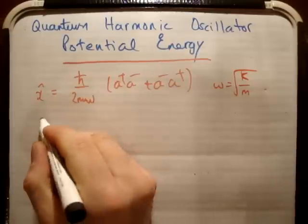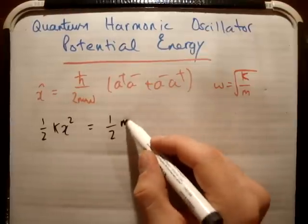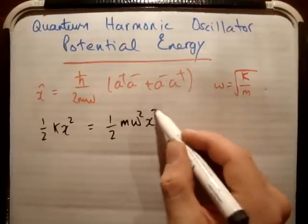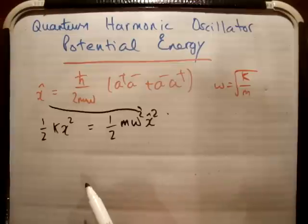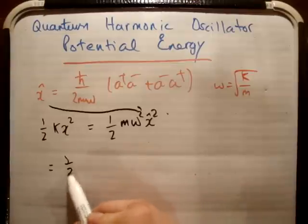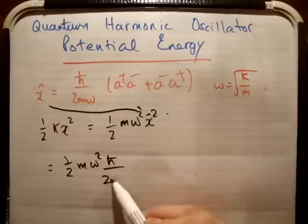Well the potential energy is 1 half kx squared. That's 1 half m omega squared x squared. And look there's our x squared there, so you can plug that straight in.